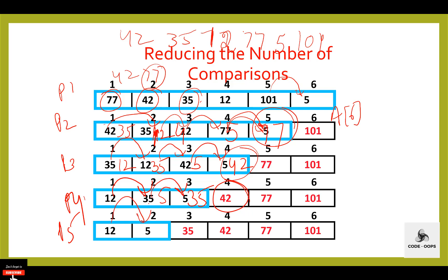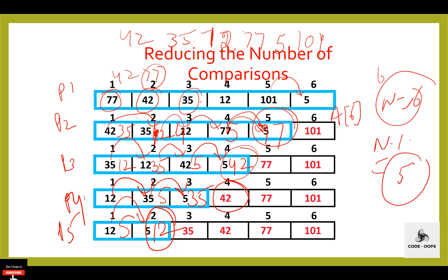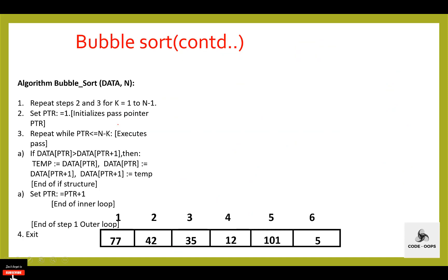If n is 6, the total number of passes will be n minus 1, that is 5. Let's see the algorithm for bubble sort. Bubble sort is the name of the algorithm, data is the array, and n is the number of elements in this array — 6 elements. The first step of the algorithm is: repeat step 2 and 3 for k equal to 1 to n minus 1, meaning 1 to 5.